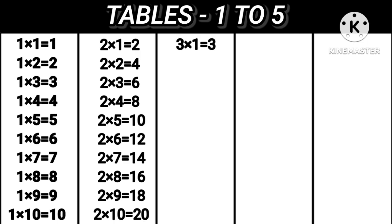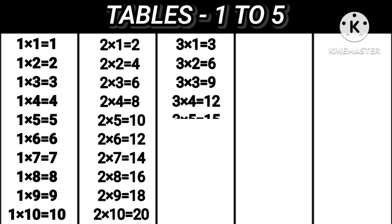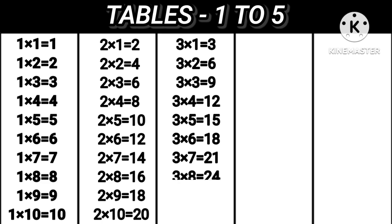3 1s are 3. 3 2s are 6. 3 3s are 9. 3 4s are 12. 3 5s are 15. 3 6s are 18. 3 7s are 21. 3 8s are 24. 3 9s are 27. 3 10s are 30.